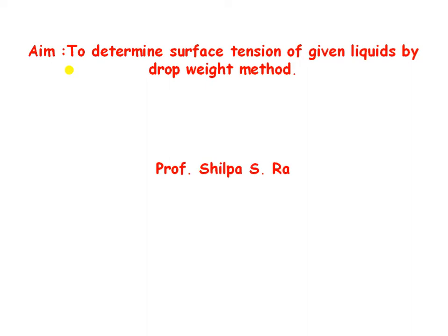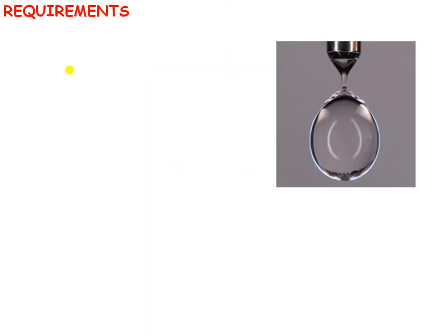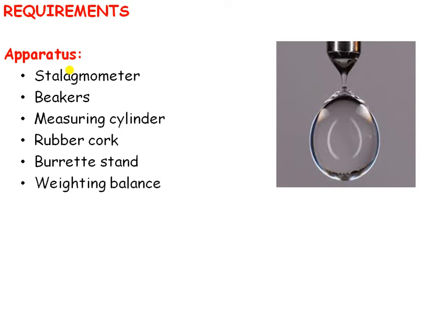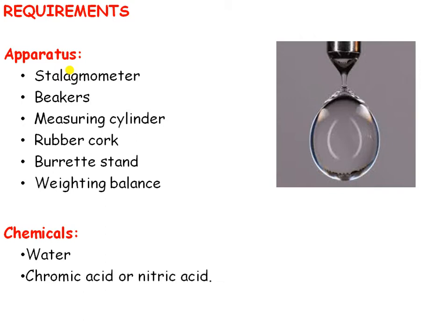Requirements: Apparatus includes a stalagmometer, beakers, measuring cylinder, rubber cork, burette stand for holding the stalagmometer in vertical position, and weighing balance. Chemicals required are water, chromic acid or nitric acid for cleaning glassware, and the test liquid of which you want to determine surface tension.